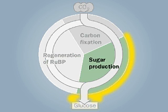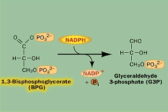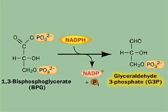In the reactions leading to the production of sugar products, phosphoglycerate kinase phosphorylates 3PG, making BPG. BPG, in a reaction catalyzed by glyceraldehyde-3-phosphate dehydrogenase, is reduced using NADPH and is also dephosphorylated, forming glyceraldehyde-3-phosphate.